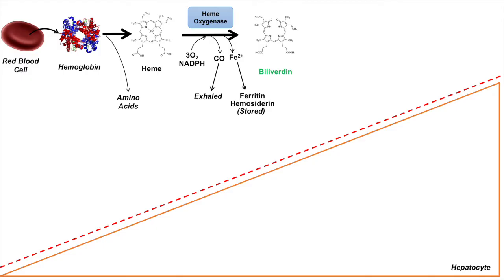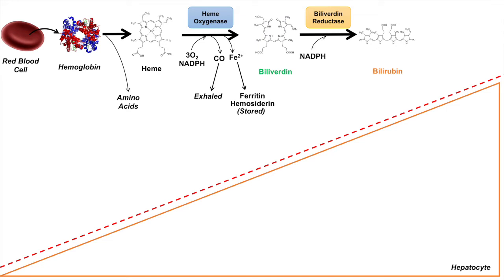Once you have biliverdin, it will undergo another enzymatic reaction by the enzyme biliverdin reductase to produce bilirubin. Bilirubin is actually a pigmented chemical, and it's actually orange in coloration. The reaction from biliverdin to bilirubin also requires NADPH. Just remember that for these couple of steps you need NADPH, which is produced from the pentose phosphate pathway.